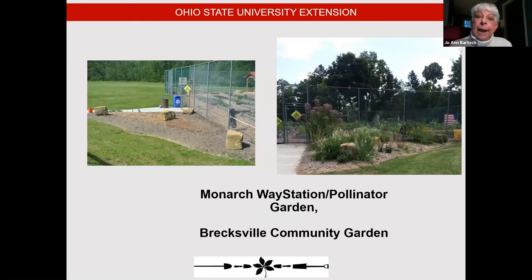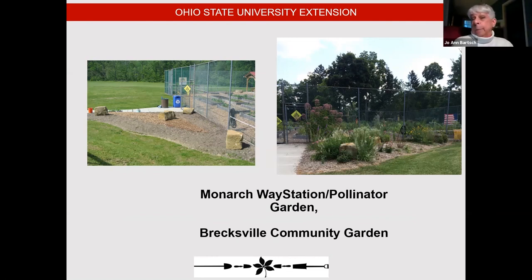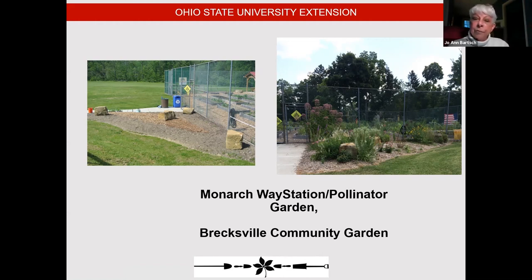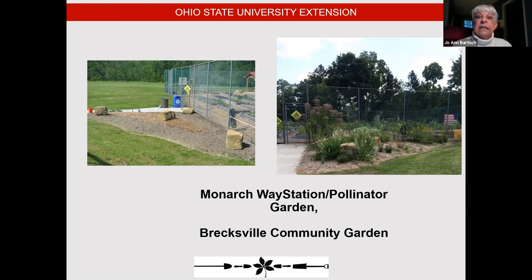This is another garden I put in at the community garden in my town. The picture on the left is when we just had rocks planted; the picture on the right is a year later. Truly, if you plant it, they will come — we saw our first monarch caterpillar just about a year after we planted. My theory on weed control is to plant the plants as densely as possible so the weeds can't grow.